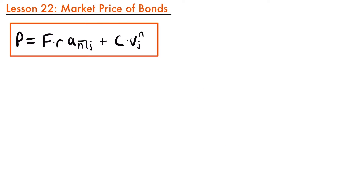Welcome back. Today we're going to be talking about how to calculate the market price of bonds. So far, when we have valued the price of bonds using this price formula, we have only calculated them at their issue date or at the end of a specific coupon period. But sometimes a bond will need to be priced at a particular moment in time that takes place between the coupon periods, which is when the coupons are paid.